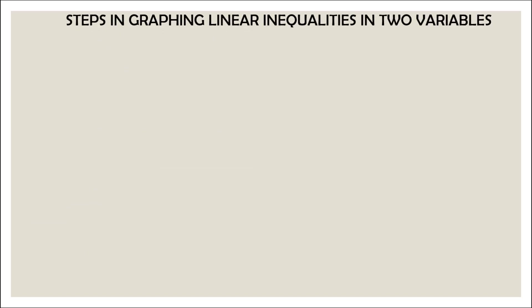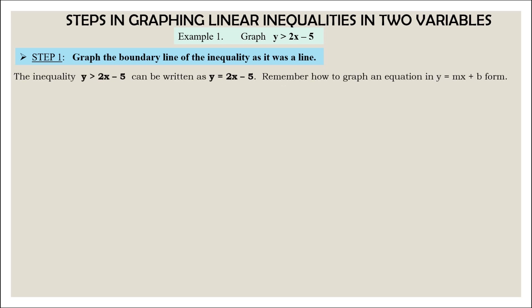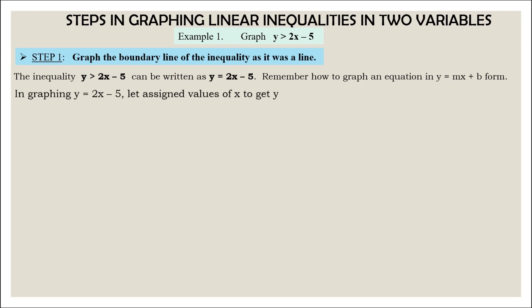Steps in graphing linear inequalities in two variables. Let's have an example: Graph y greater than 2x minus 5. Step 1: Graph the boundary line of the inequality as if it were an equation. The inequality y greater than 2x minus 5 can be written as y is equal to 2x minus 5. Remember how to graph an equation in y equals mx plus b form. In graphing y equals 2x minus 5, let us assign values of x to get y.